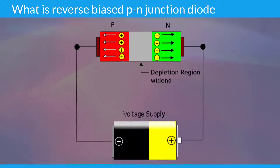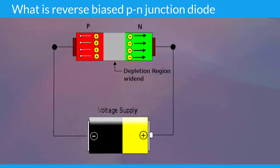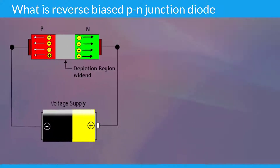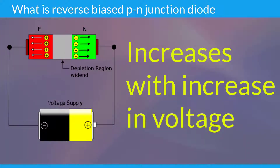If the reverse biased voltage applied on the PN junction diode is further increased, then even more free electrons and holes are pulled away from the PN junction. So, this increases the width of the depletion region. Hence, the width of the depletion region increases with increase in voltage.